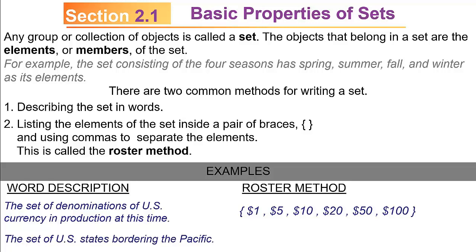The set of US states bordering the Pacific — that's the word description of the set. The roster method would be to list each state individually, separated by commas, inside a set of braces. They are California, Oregon, Washington, Alaska, and Hawaii. So the ideas are simple: you can describe the set in words, or you can list the elements using the roster method.